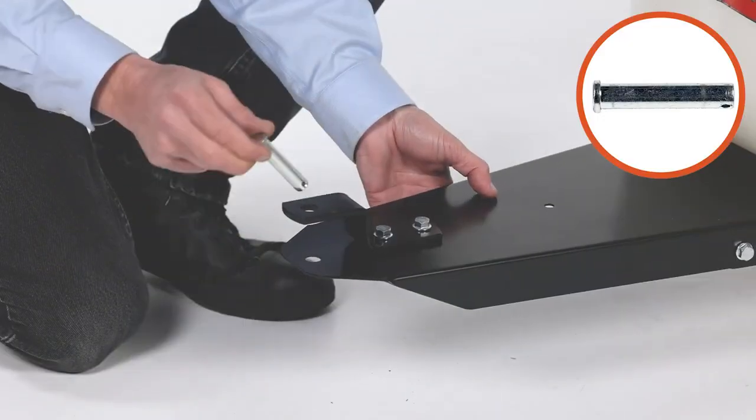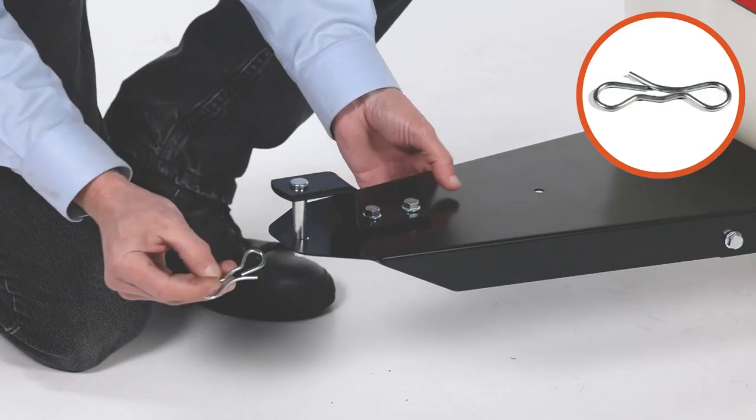Then insert the hitch pin, Part D, and secure it with the bowtie clip, Part G.